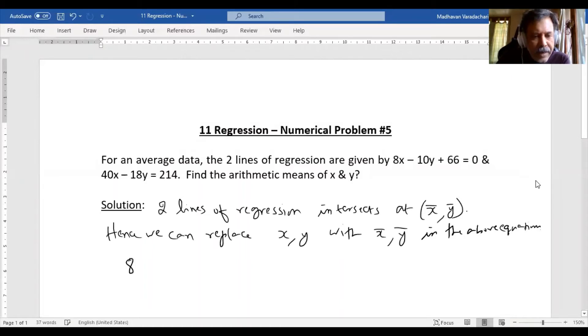So what do we get? First equation: 8X̄ - 10Ȳ = -66, call this equation 1. Second equation: 40X̄ - 18Ȳ = 214, we'll keep this as equation 2.